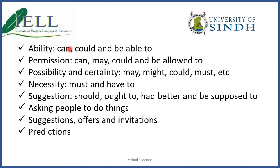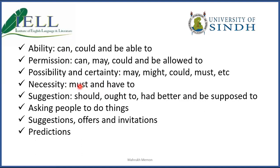For ability we use 'can,' 'could,' 'be able to.' For permission we use 'can,' 'may,' 'could,' 'be allowed to' — for example, 'you are allowed to do this.' For possibility or certainty we use 'may,' 'might,' 'could,' or 'must,' which would vary according to the conditional sentences — zero condition, first condition, and so on.